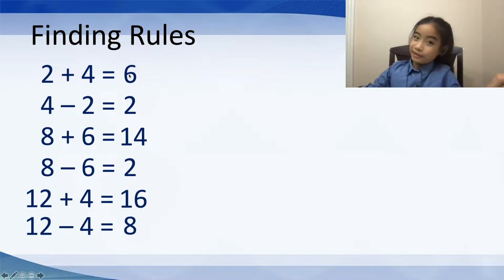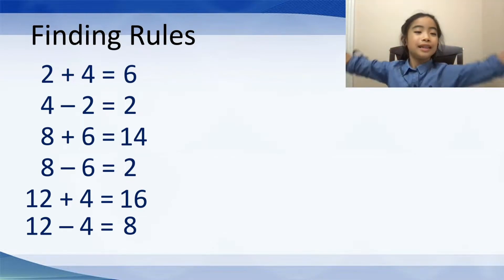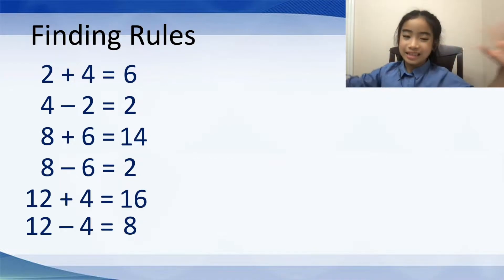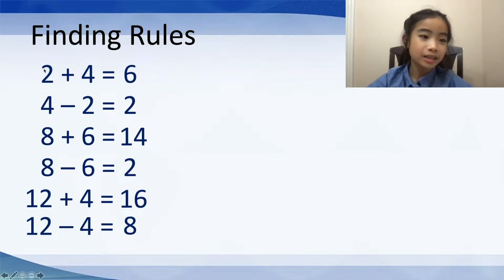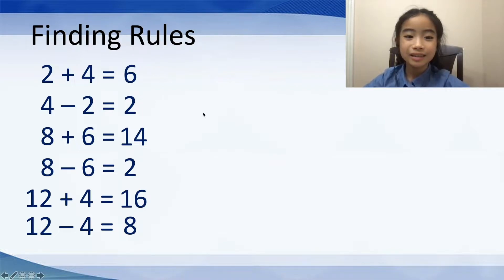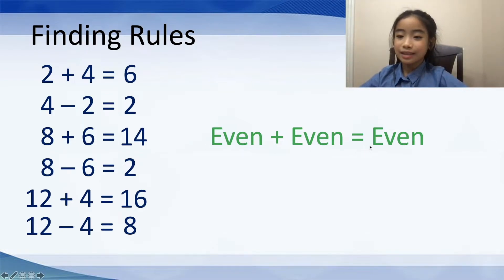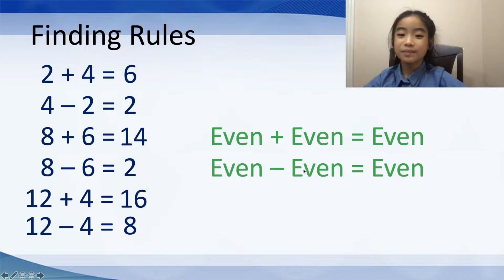Did you find the rule here? Well, I did! The two numbers on the left side of the equation sign are even numbers, and the result is an even number too. For example, let's use the first one: 2 plus 4 equals 6. 2 and 4 are both even numbers, and the result is 6, which is also an even number. So we have the rule: even plus even equals even. And of course, even minus even equals even, because we have some subtraction questions here.